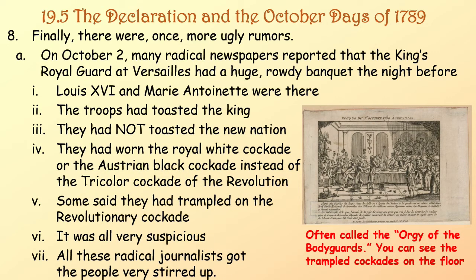Factor eight: there were once more ugly rumors. On October the second, many radical newspapers reported that the king's royal guard at Versailles had a huge, rowdy banquet the night before. Louis XVI and Marie Antoinette were there. The troops had toasted the king but not the new nation. They had worn the royal white cockade or the Austrian black cockade instead of the tricolor cockade of the Revolution. Some said they had trampled on the revolutionary cockade. All of this got the people very stirred up — this event is often called 'the orgy of the bodyguards.'